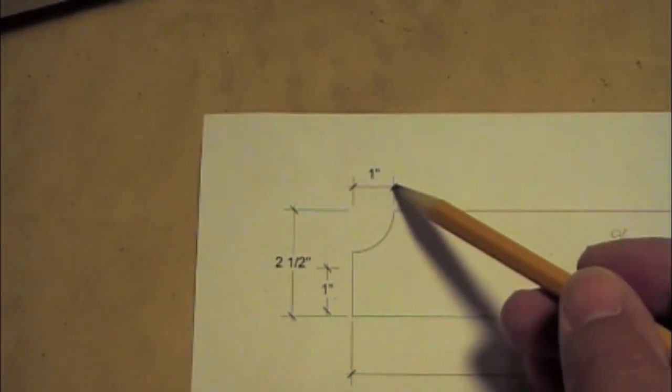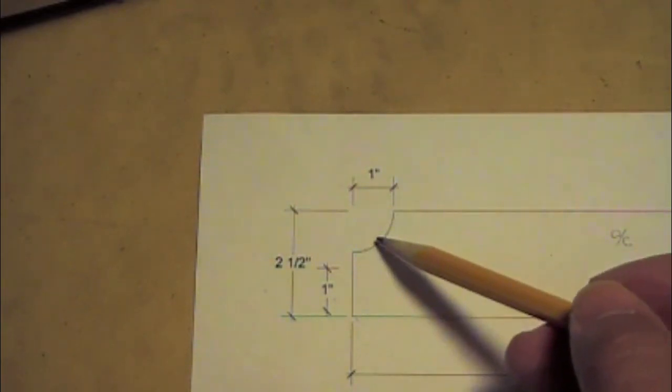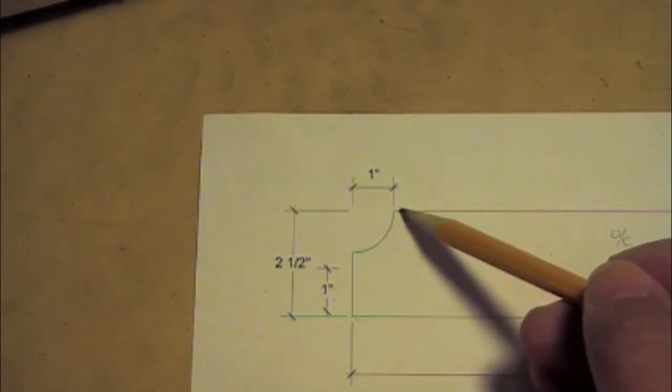And at this end we have a one inch radius quarter of a circle to be cut out of the end.